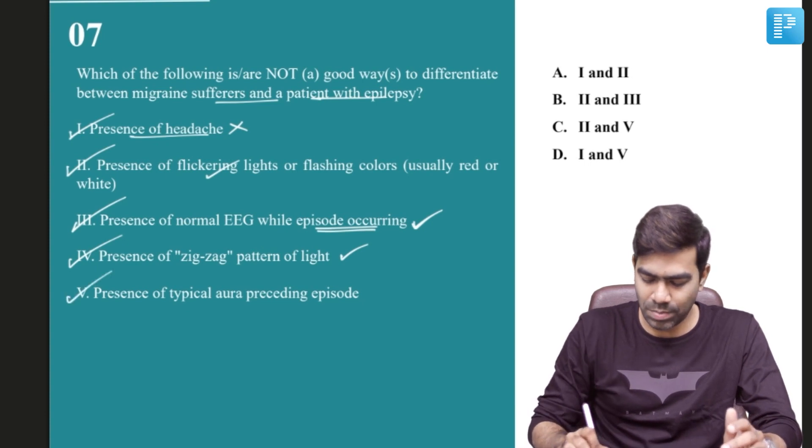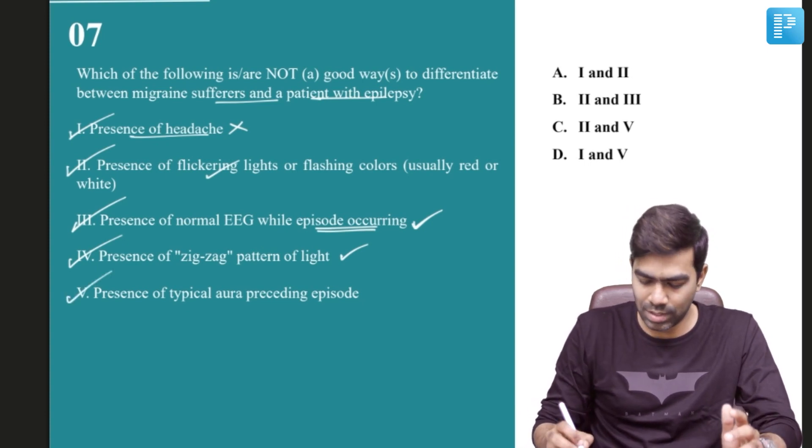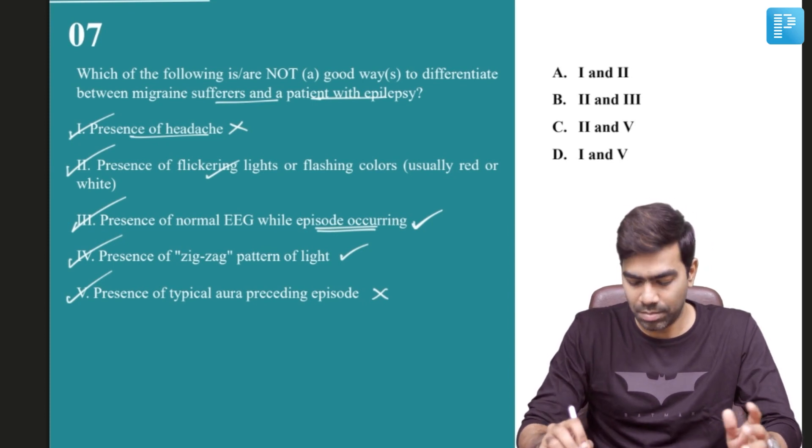Statement 5: presence of typical aura. This is something that cannot differentiate between migraine and epilepsy because aura can present even before epilepsy, and patients with migraine may not have aura at all. Migraine without aura is what we call common migraine, because 70 to 80 percent of the time migraine happens without aura. Only 20 to 30 percent of the time migraine happens with aura, which is what we call classic migraine. So statement 5 is wrong — it cannot differentiate between migraine and epilepsy.